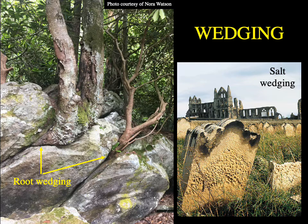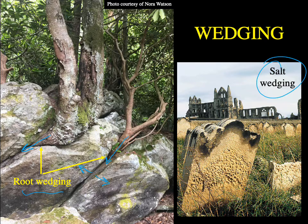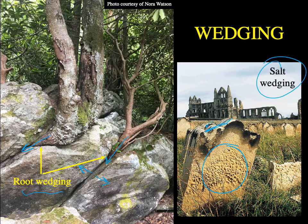Other types of wedging include root wedging, where roots actually get into the cracks in the rock and as they grow bigger the cracks get wedged open larger and larger. There's also salt wedging, common in coastal regions where wind off the ocean carries water vapor with dissolved salt — halite gets into cracks, crystallizes, and as the crystals grow bigger and bigger they push the rock open mechanically.